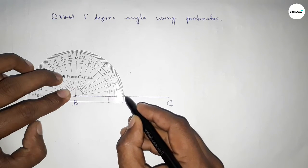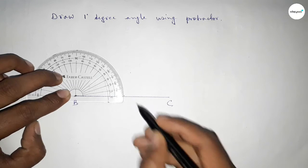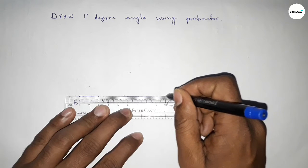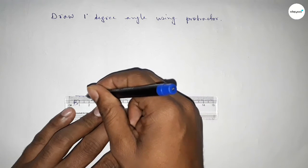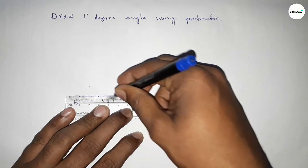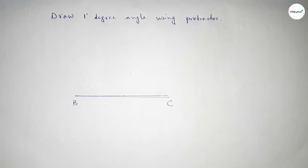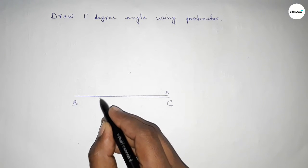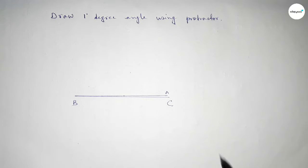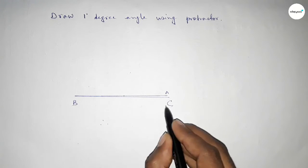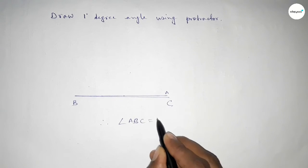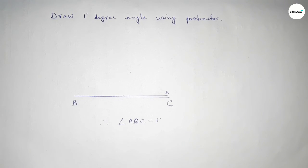Now joining this to get the one-degree angle and taking point A, so angle ABC equals one degree.